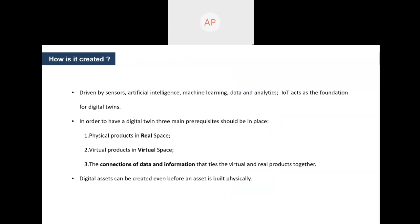How is this digital twin created? Basically the digital twin is driven by sensors — it takes information collected from sensors attached to the physical model. IoT is the foundation for digital twins. Apart from that, it is driven by artificial intelligence, machine learning, data, and analytics. We have three main requisites for digital twin: first, the physical product in the real space; second, a virtual copy or virtual product in virtual space; and third, a connection of data and information that ties up the digital twin and the original entity — this tying up is done via sensors.